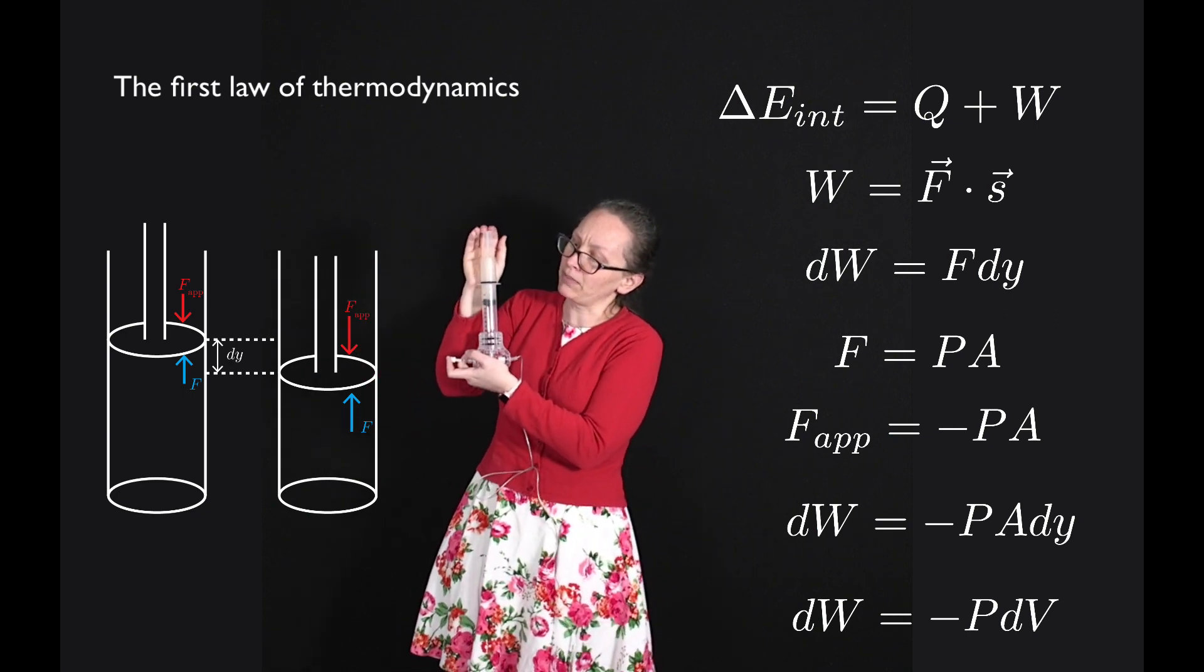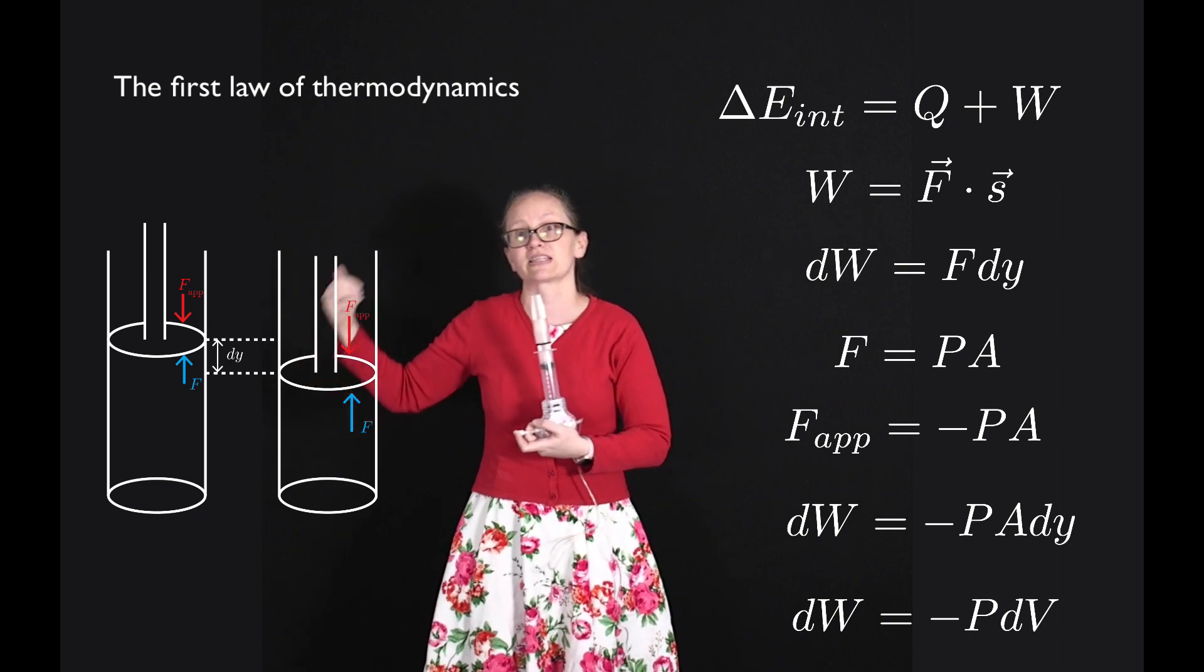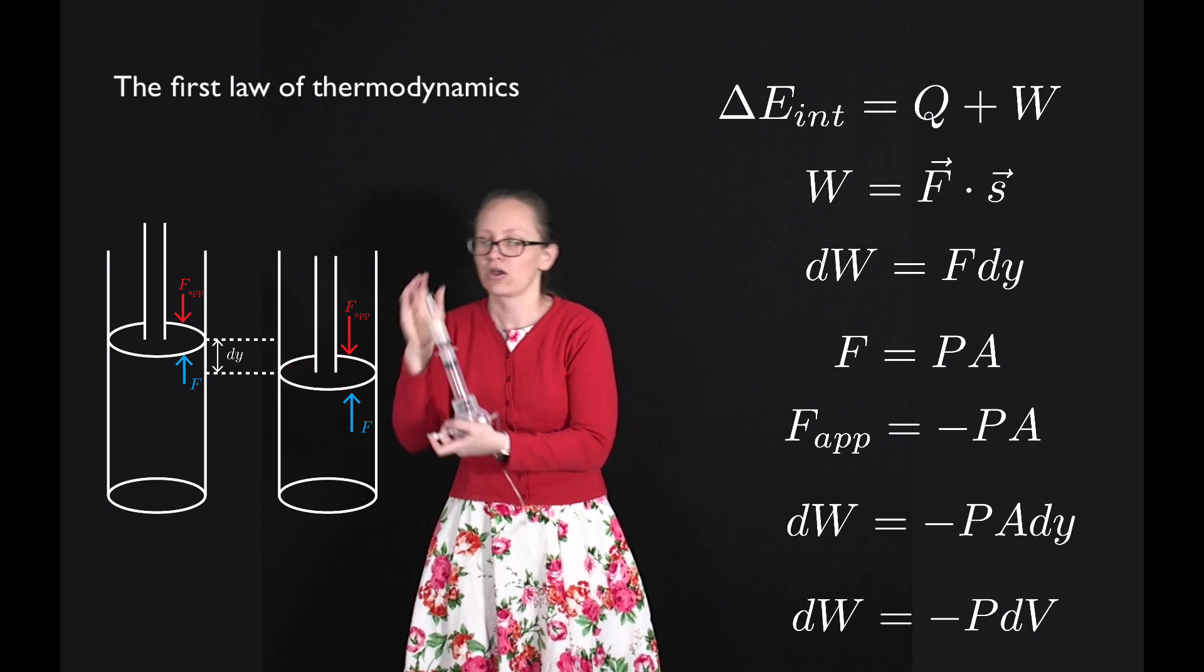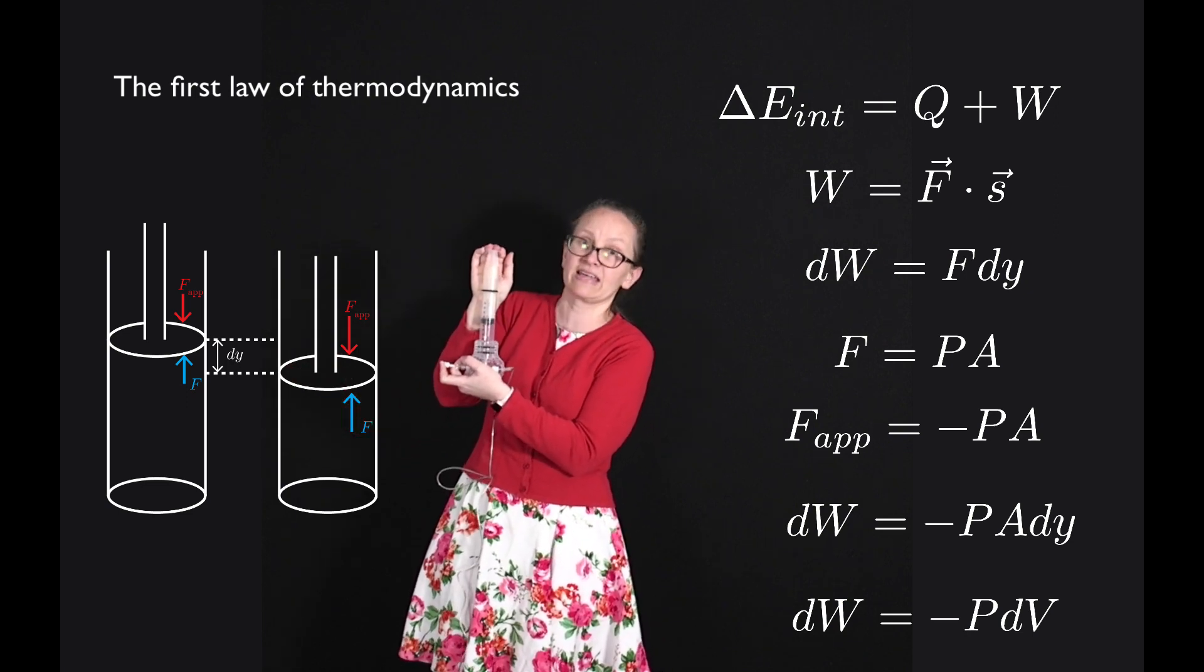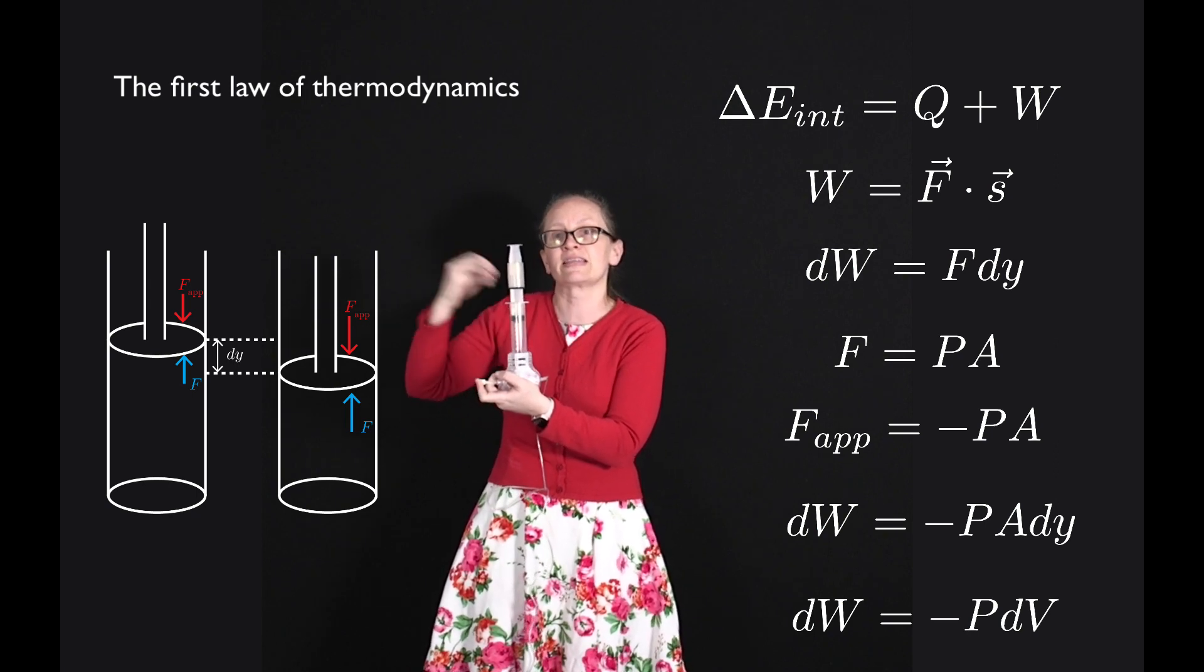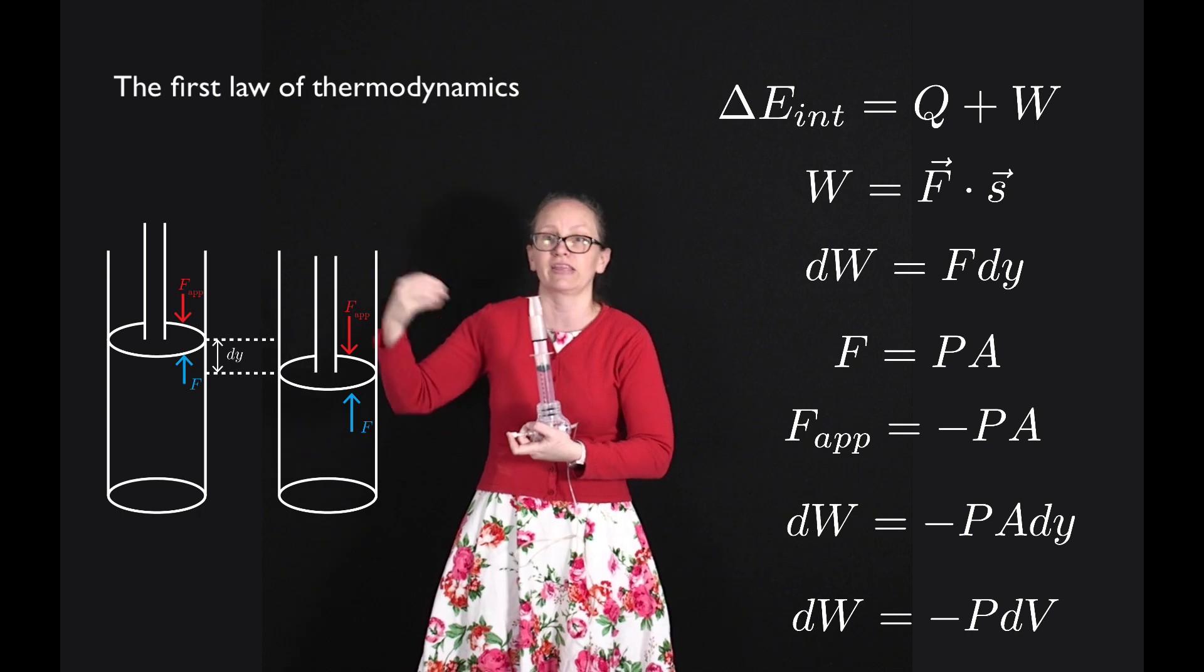So this tells me that when I compress a gas, in that case dV is negative because the volume is getting smaller and so I'm doing positive work on the gas. On the other hand, if a gas expands, the work done is negative and this means that the work is done by the gas rather than on the gas.